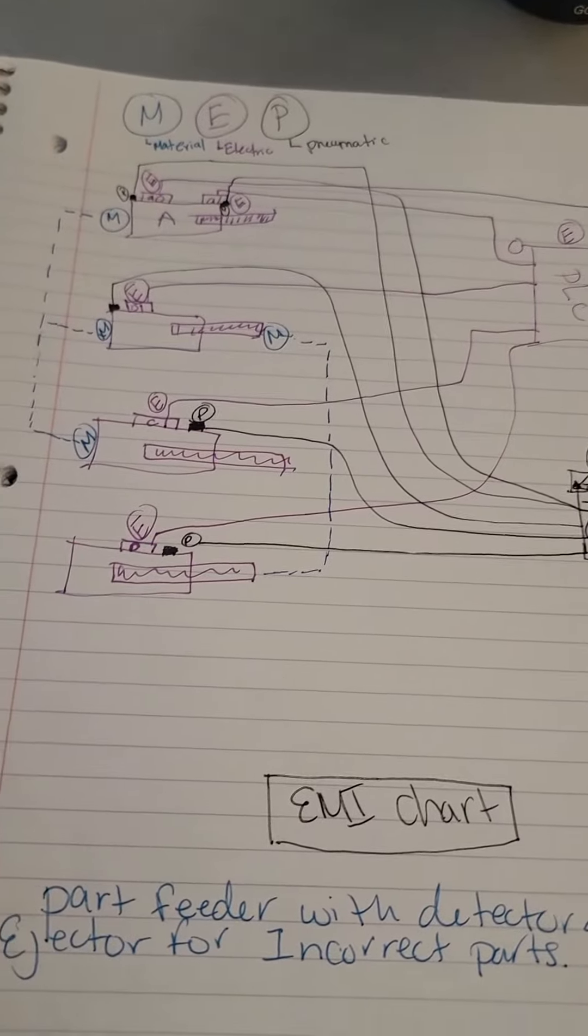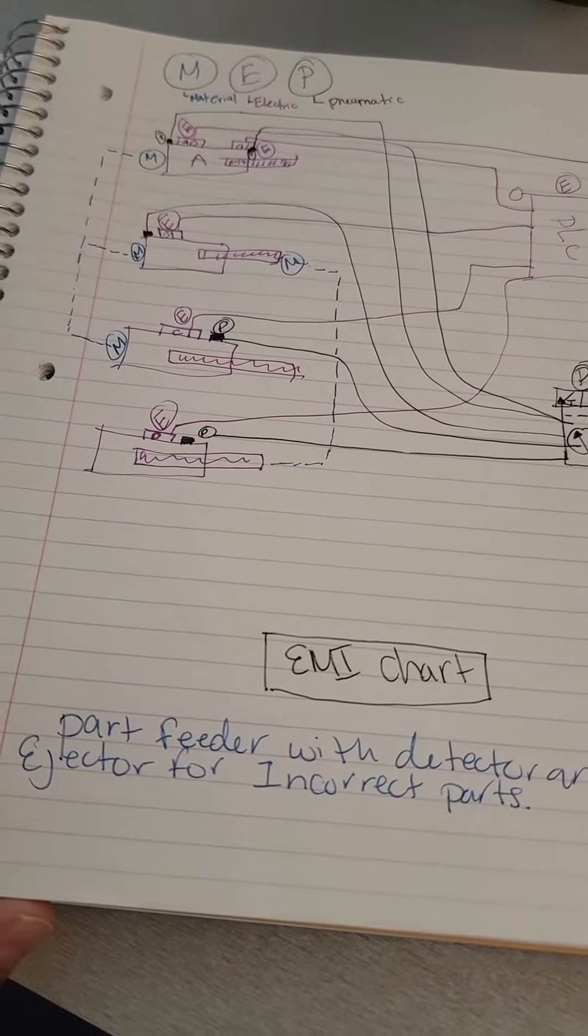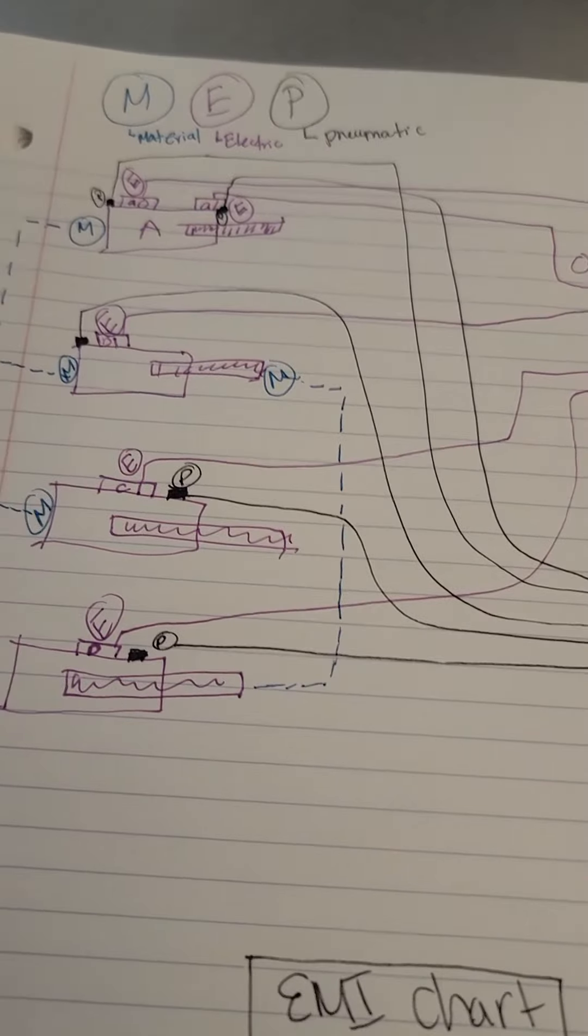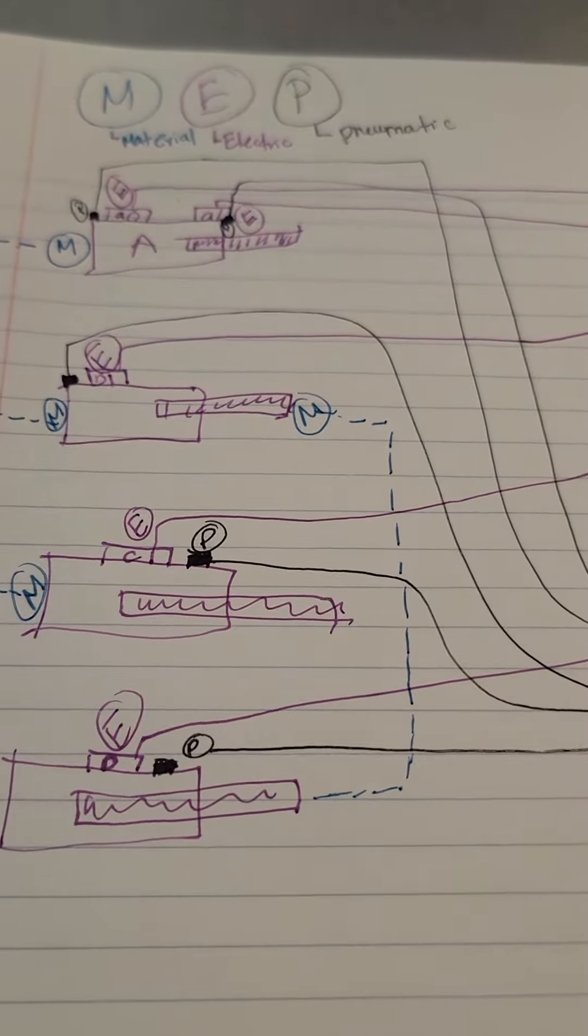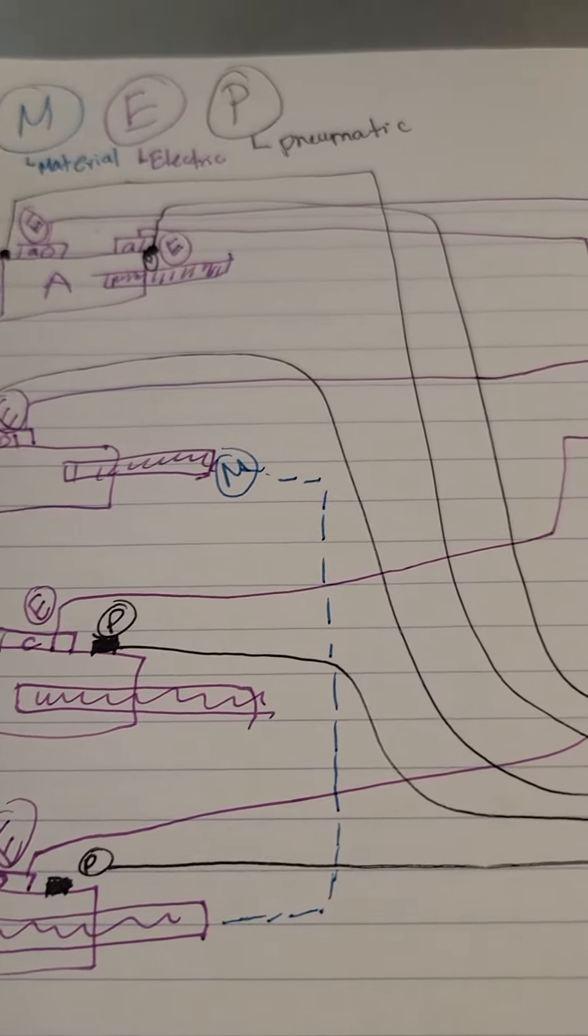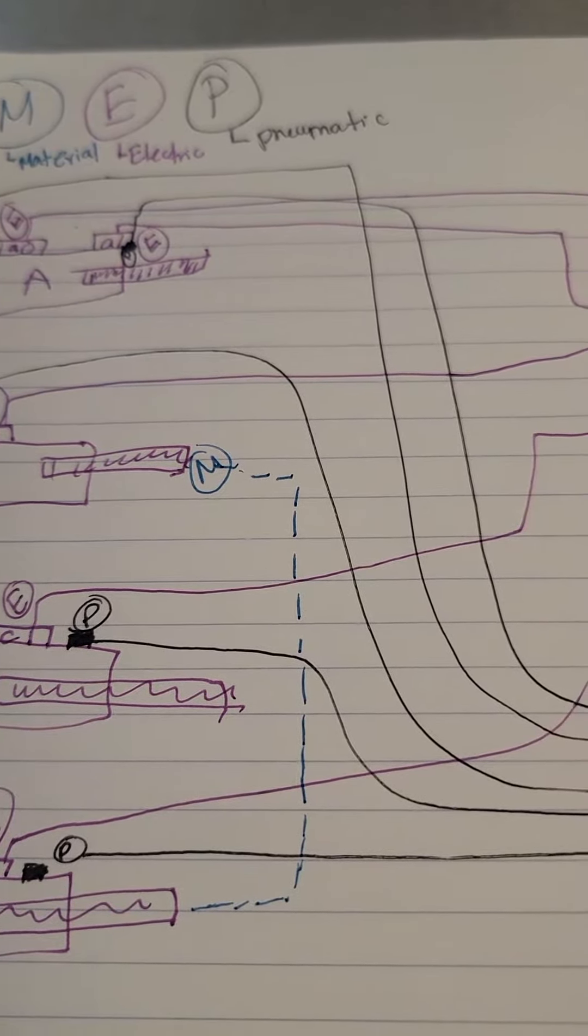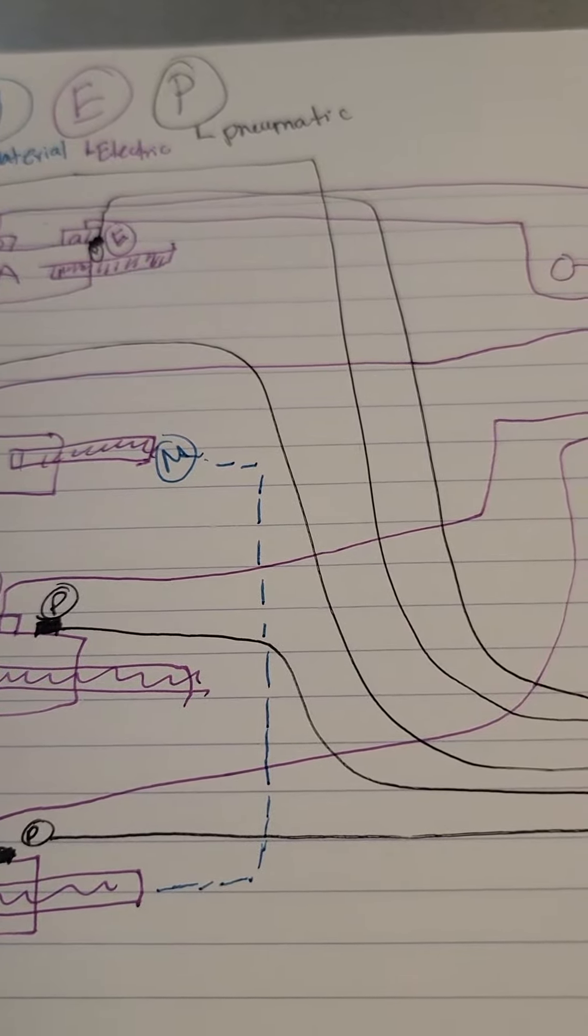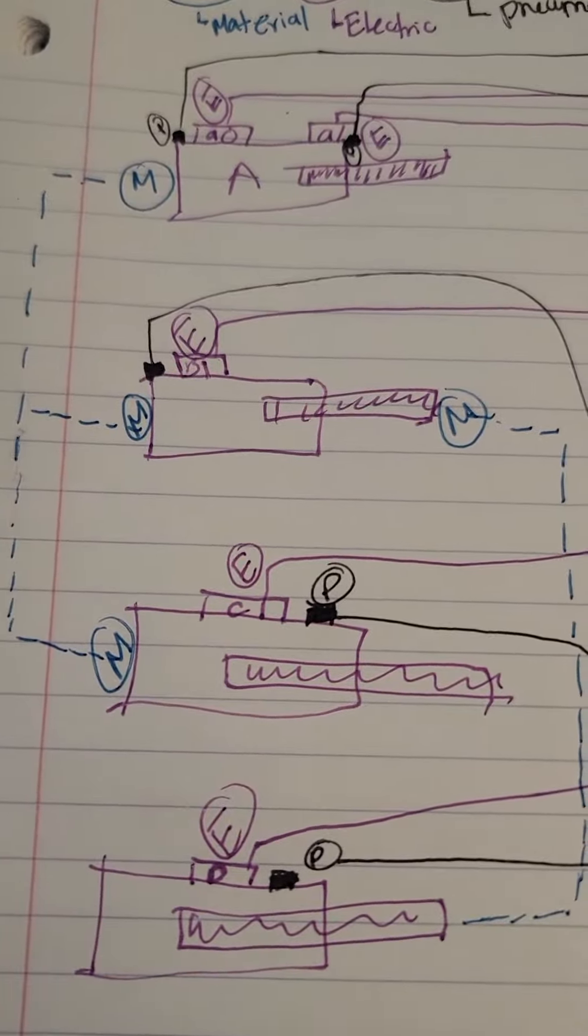This is my EMI chart for my part feeder with a detector and ejector for incorrect parts. And it is labeled as the M in blue for material, the E in purple for electric, and the P in black for pneumatic energy. And as you can see here,